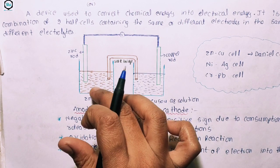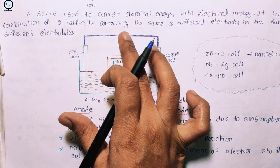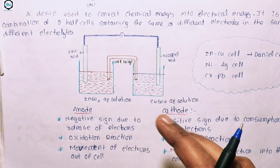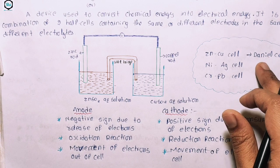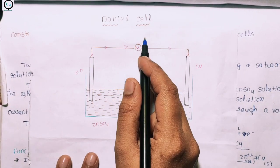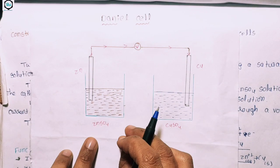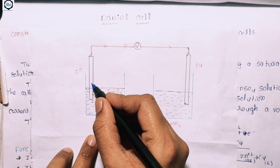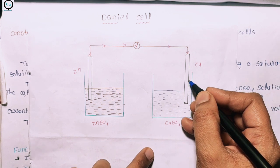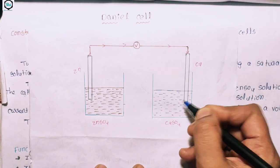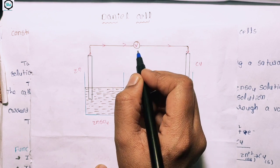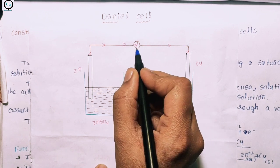There is movement of electrons out of the cell at the anode and into the cell at the cathode. In the Daniel cell, there is a zinc rod dipped in zinc sulfate solution, a copper rod dipped in copper sulfate solution, a conducting wire connecting them, and a voltmeter connected for current observation.